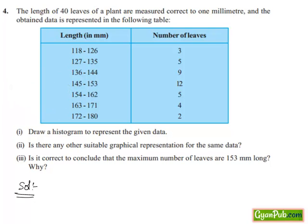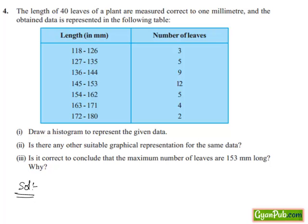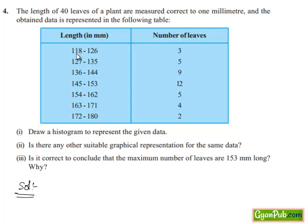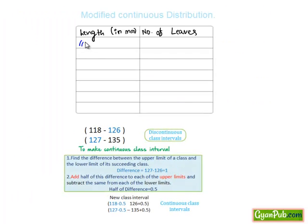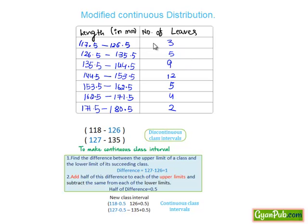So let's take the tabular form in which length in mm and number of leaves were written. We shall take it as 117.5 to 126.5. And similarly we have taken and the number of leaves were written as follows.